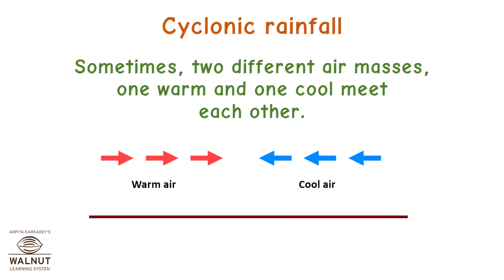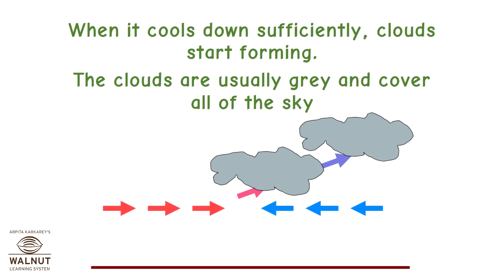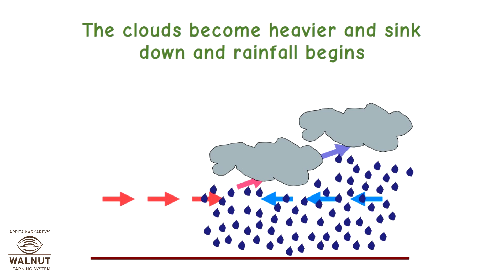Cyclonic Rainfall. Sometimes two different air masses, one warm and one cool, meet each other. The warm air rises over cool air and cools. When it cools down sufficiently, clouds start forming. The clouds are usually grey and cover all of the sky, becoming heavier and sinking down, and rainfall begins.